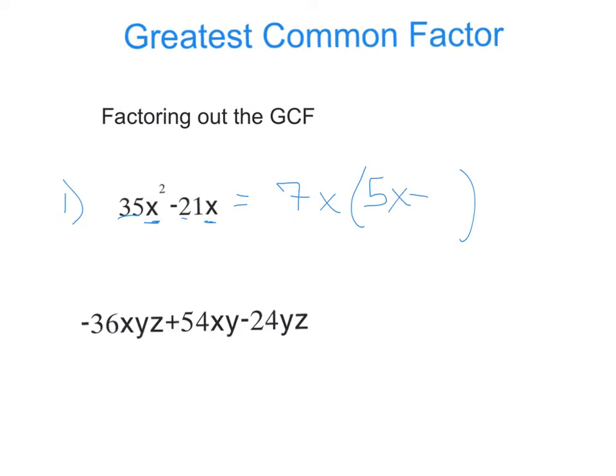Then, we have a minus. And, what do I have to multiply 7x by to get 21x? That would be a 3. So, factoring out the greatest common factor, 7x, we still have to multiply it by 5x minus 3 to get that same answer that we started with.